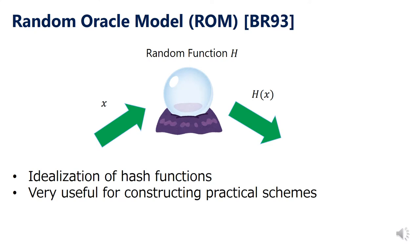The random oracle model, ROM, was introduced by Bellator and Rogowie in 1993. This model is the idealization of cryptographic hash functions. In the ROM, some random function H is randomly chosen at the beginning of security games. Adversary is allowed to make oracle access to the random function, and the ROM is very useful for analyzing practical cryptographic schemes, so this has been used for analyzing a variety of constructions.